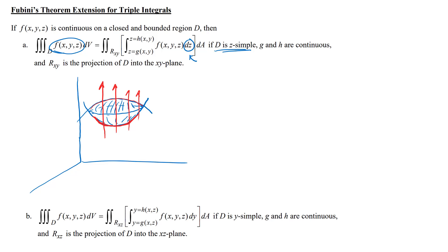That would be a z-simple region because going through the region in the direction of increasing z, you're always entering through the same surface and leaving through the same surface. The inner integral has dz with z equals g of xy as the lower limit — where you enter — and h of xy as the upper limit — where you leave. Outside of that, we have a dA double integral over the region r-sub-xy.